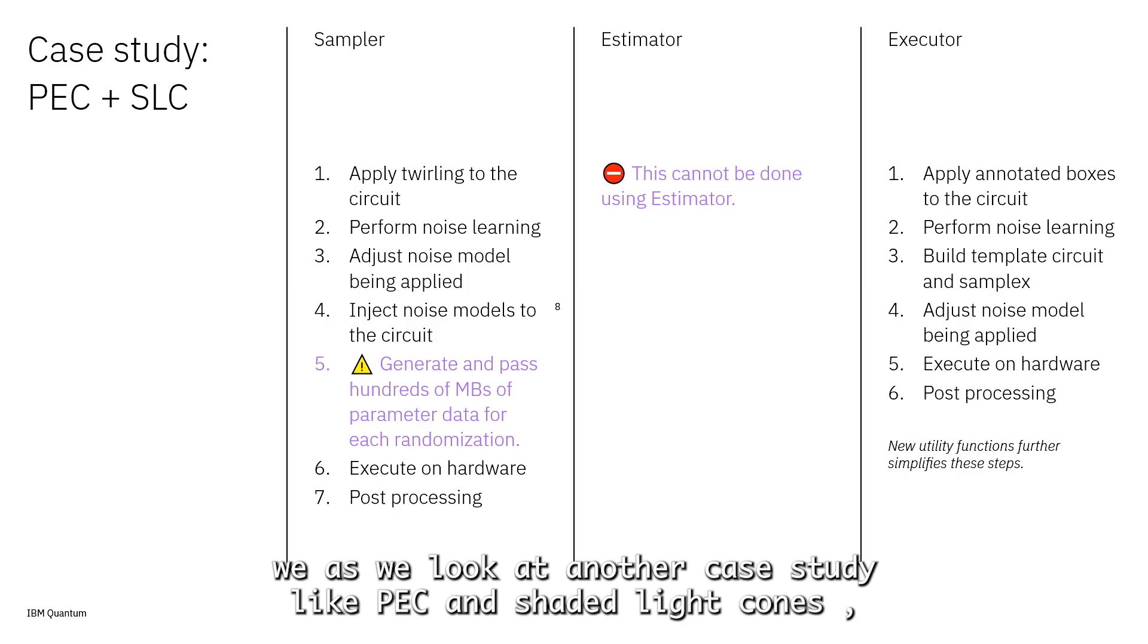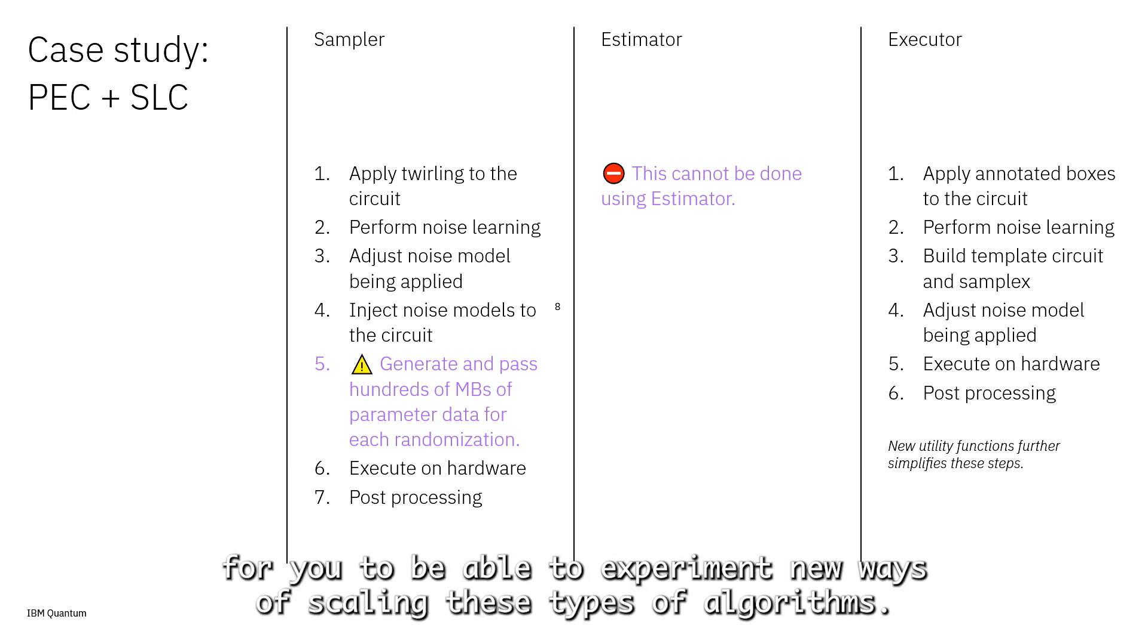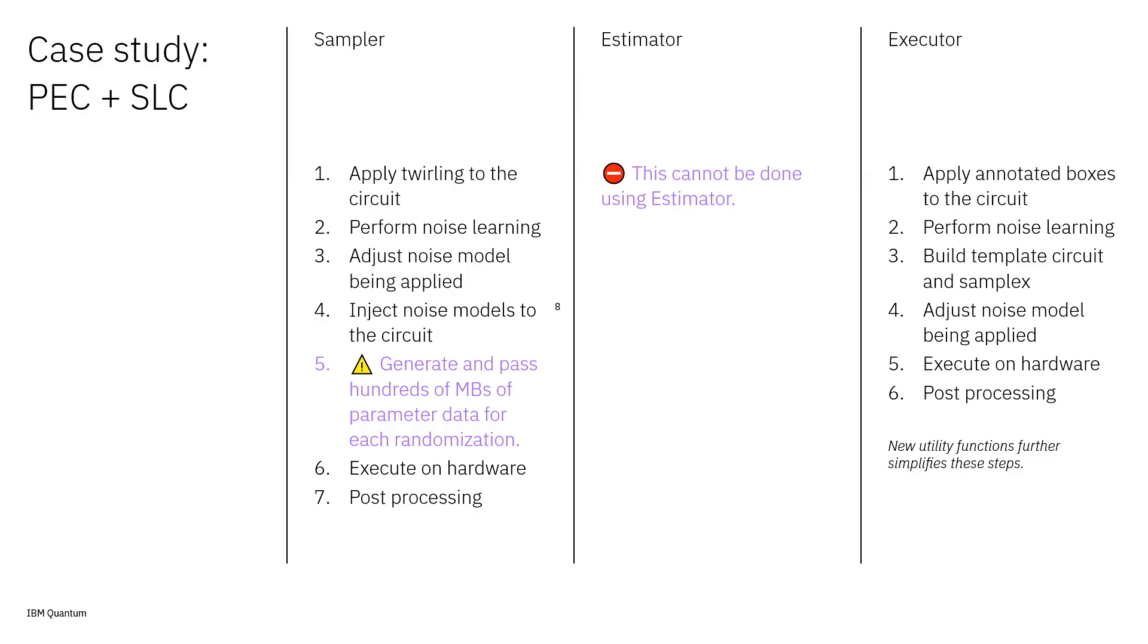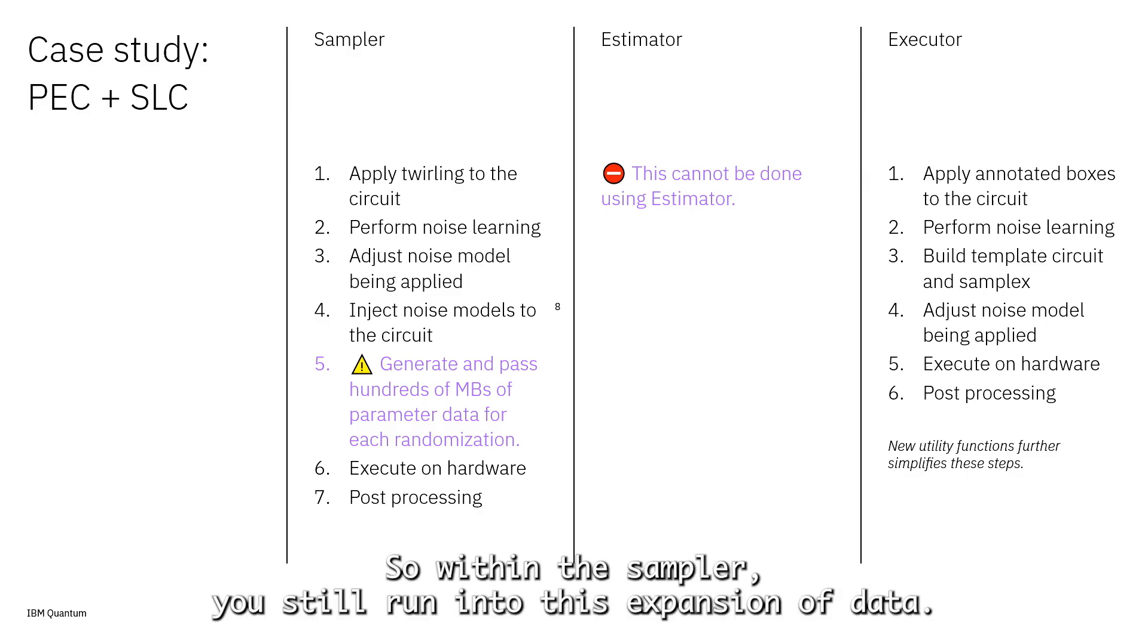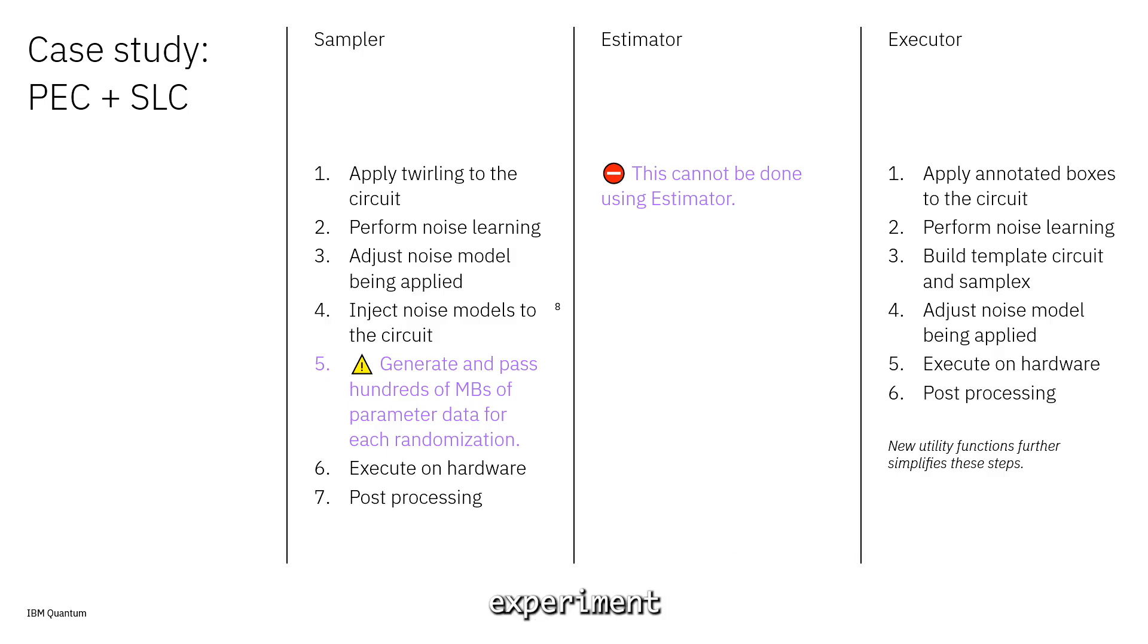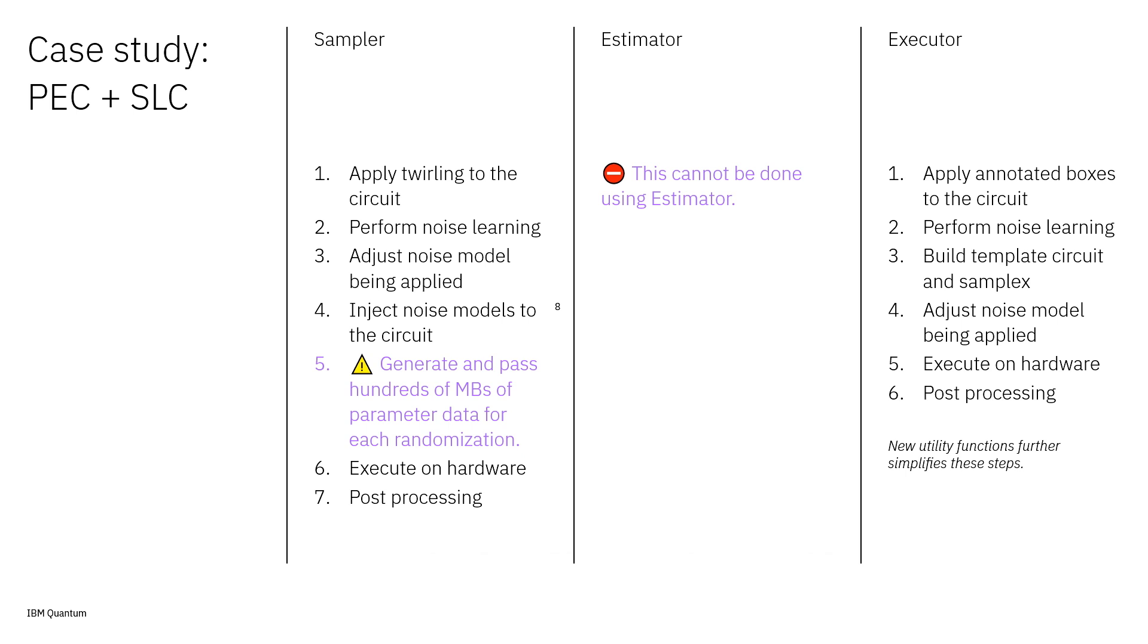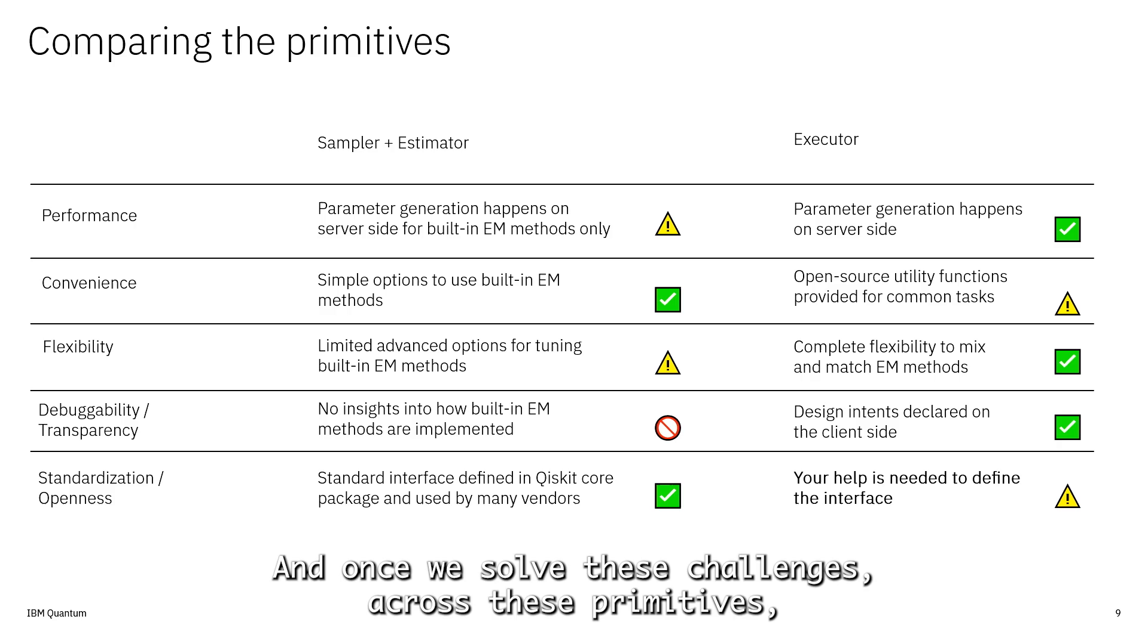Looking at another case study like PEC and shaded light cones, this is where the existing primitives are a little bit prohibitive for you to experiment with new ways of scaling these types of algorithms. Within the sampler, you still run into this expansion of data; in the estimator, you don't have the controls today to experiment with how shaded light cones could provide you the trade-offs or help you deal with some of the scaling challenges. This is an example where the executor workflow will enable you to start to experiment with these things.